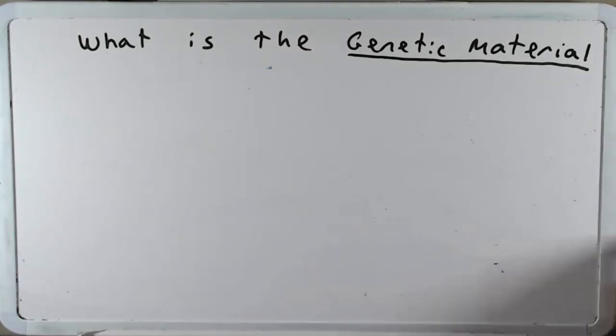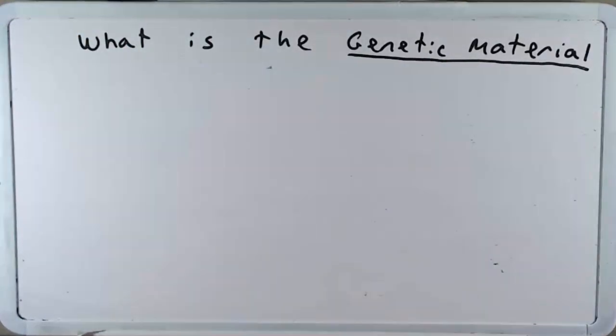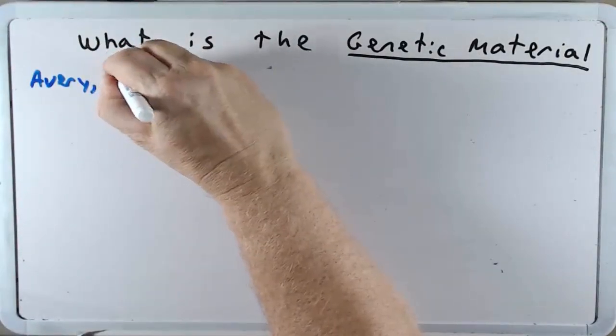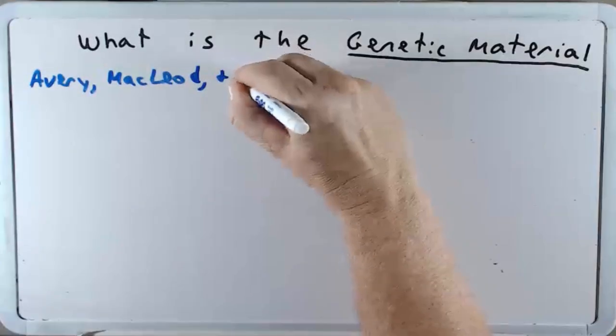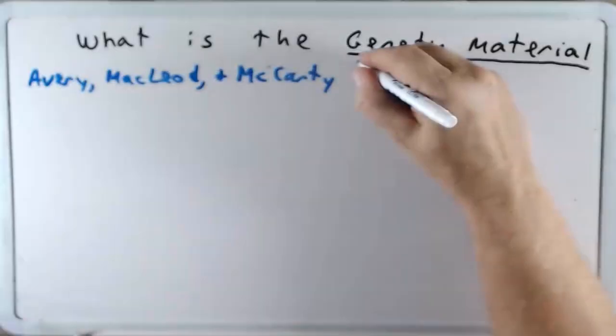This is where Griffith's story ends as far as this discussion goes. Now three other scientists picked up his story, his data, and wanted to try to identify what that transforming principle was. And it was a team of scientists Avery, McLeod, and McCarty. And they did their experiments in 1944.